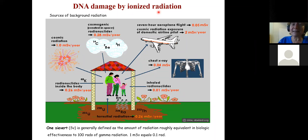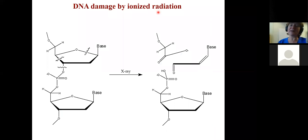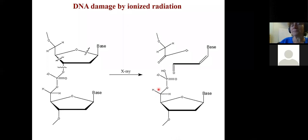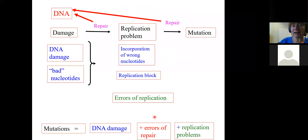Ionizing radiation has many sources — terrestrial radiation such as radon, exposure during air travel, chest X-rays, and other things. Unlike UV, which causes just one type of damage, ionizing radiation creates many different types: oxidative damage, and very specifically, breaks in the DNA backbone — breaks in the phosphate-sugar backbone — including double-strand breaks.